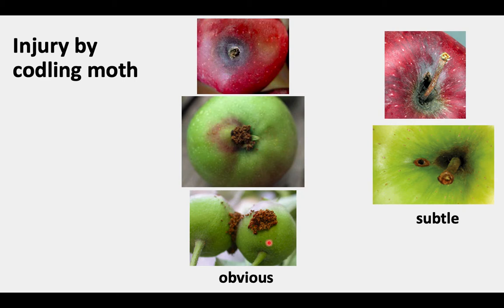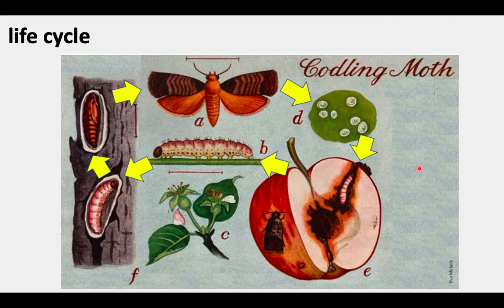Another obvious form of damage is when the entrance hole is between two young apple fruit, and you can see a lot of frass pushed out around that. But there are more subtle forms of the injury, as shown in the two pictures on the right. There can be a small crack or a small hole near the stem that might not have any obvious frass, but often when you cut into the apple at these type of injuries, there is codling moth tunnel underneath.